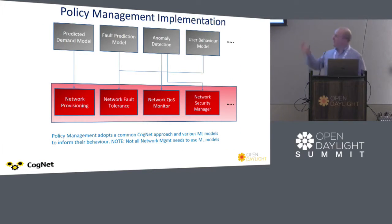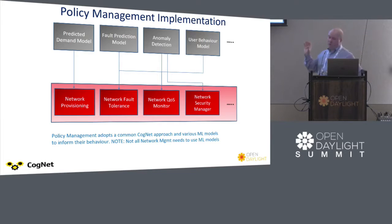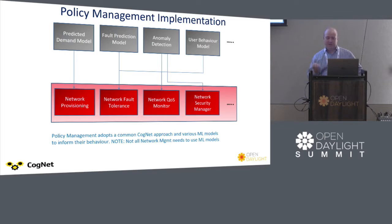How do we do policy management? We have sets of machine learning models — not a complete set, but just examples. We have different models illustrating predicted demand, fault prediction, anomaly detection, and user behaviour models. In turn, we have different sets of policy managers: one looking at network provisioning, another at fault tolerance, another at network QoS monitoring. There's not necessarily a one-to-one relationship between these, because while some policy managers will use a specific model, some may use several. Also, what we're looking at is a mixture — it's not exclusively machine learning informed. There may be traditional deterministic approaches to management combined with machine learning.